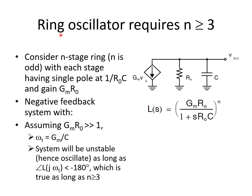Thus, for proper operation, a ring oscillator requires N at least equal to 3, and moreover, N must be an odd number to ensure negative feedback around the loop at low frequencies. Let's consider an N-stage ring where N is odd and where each stage can be modeled by a single time constant response, having a pole at 1 over R0·C and a DC gain given by GM times R0.